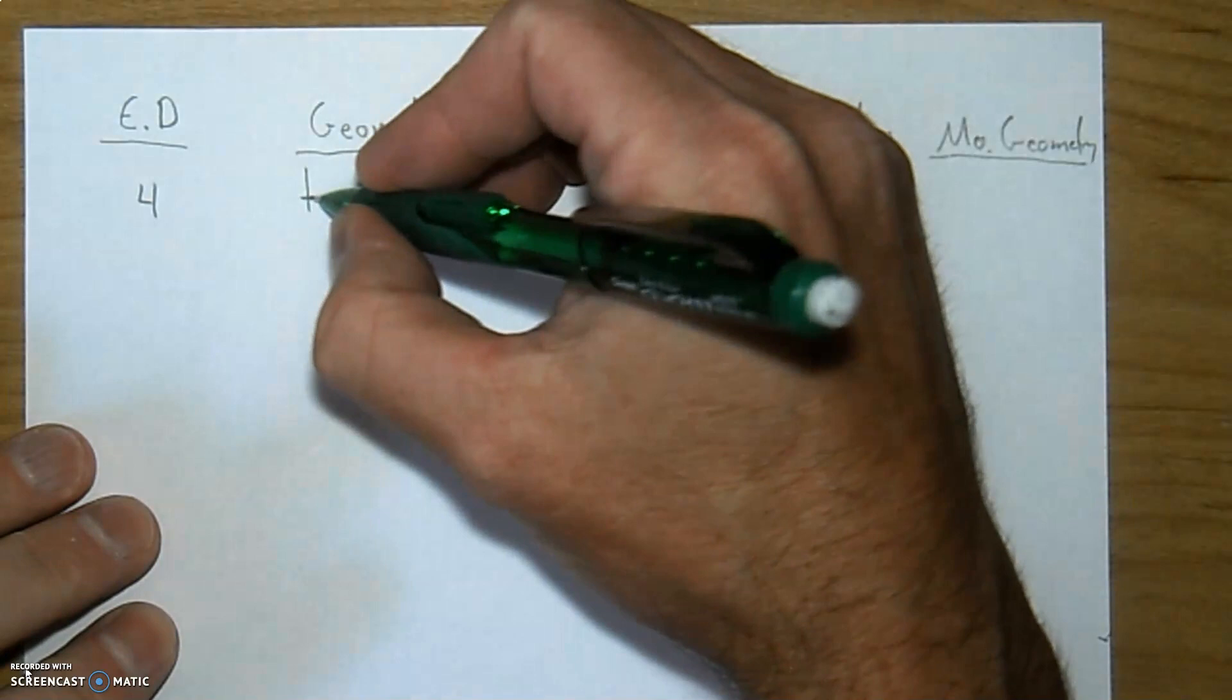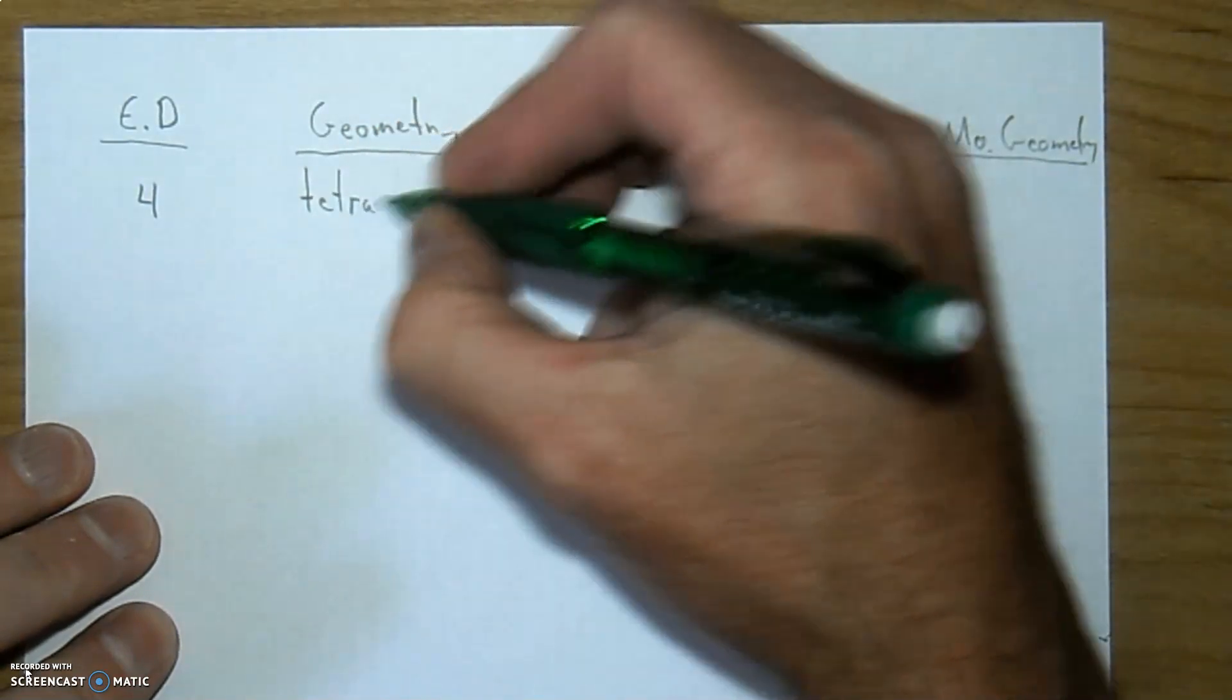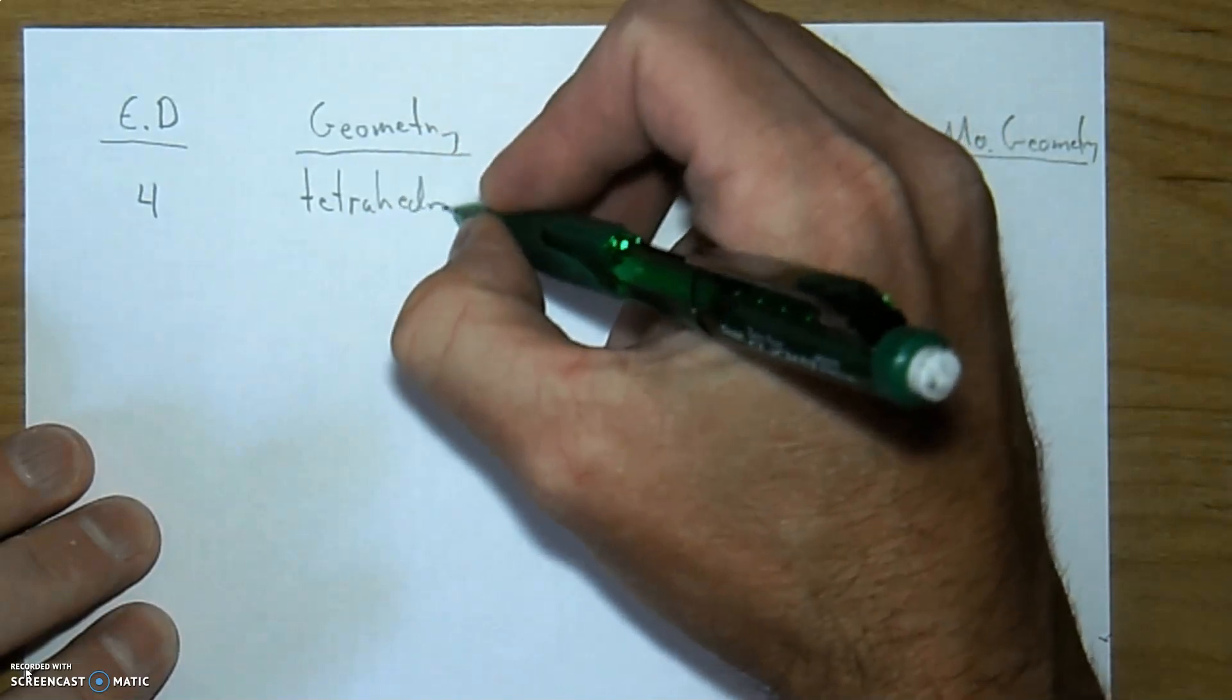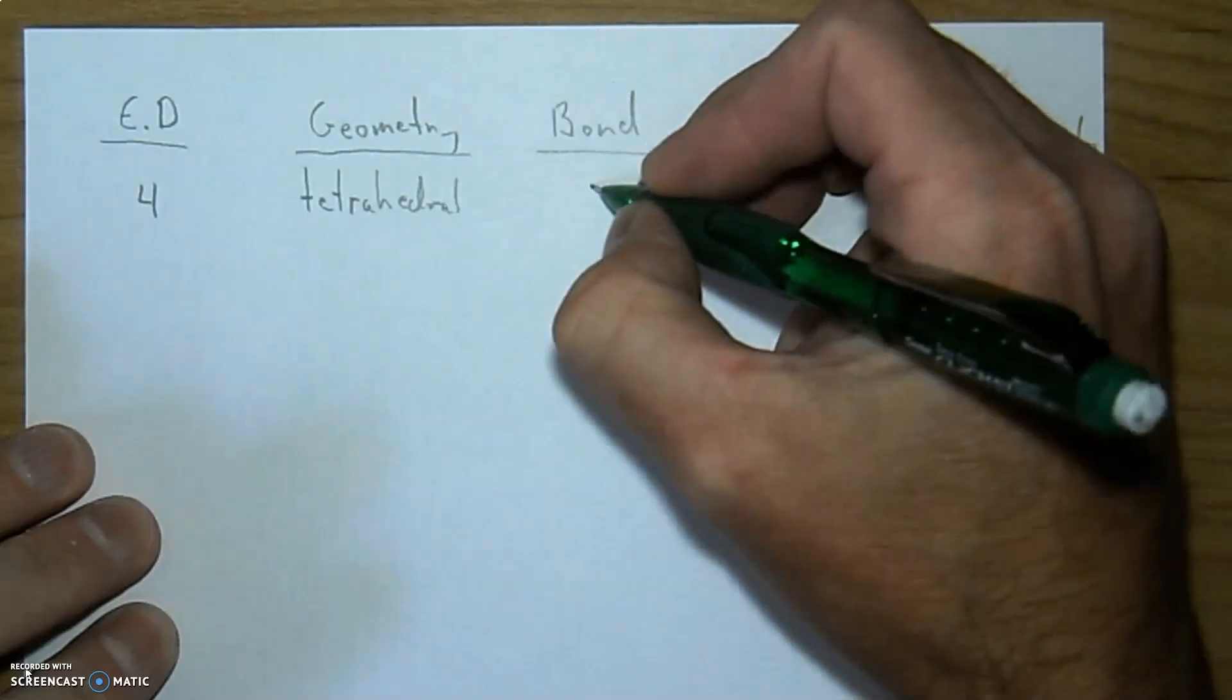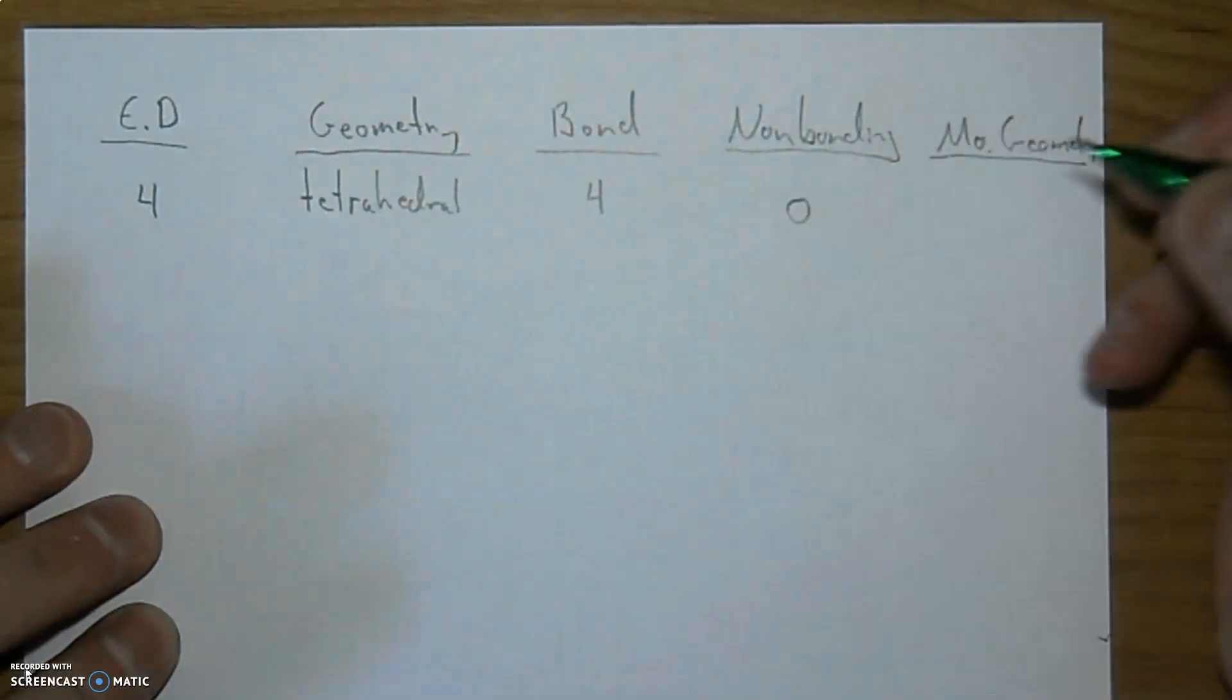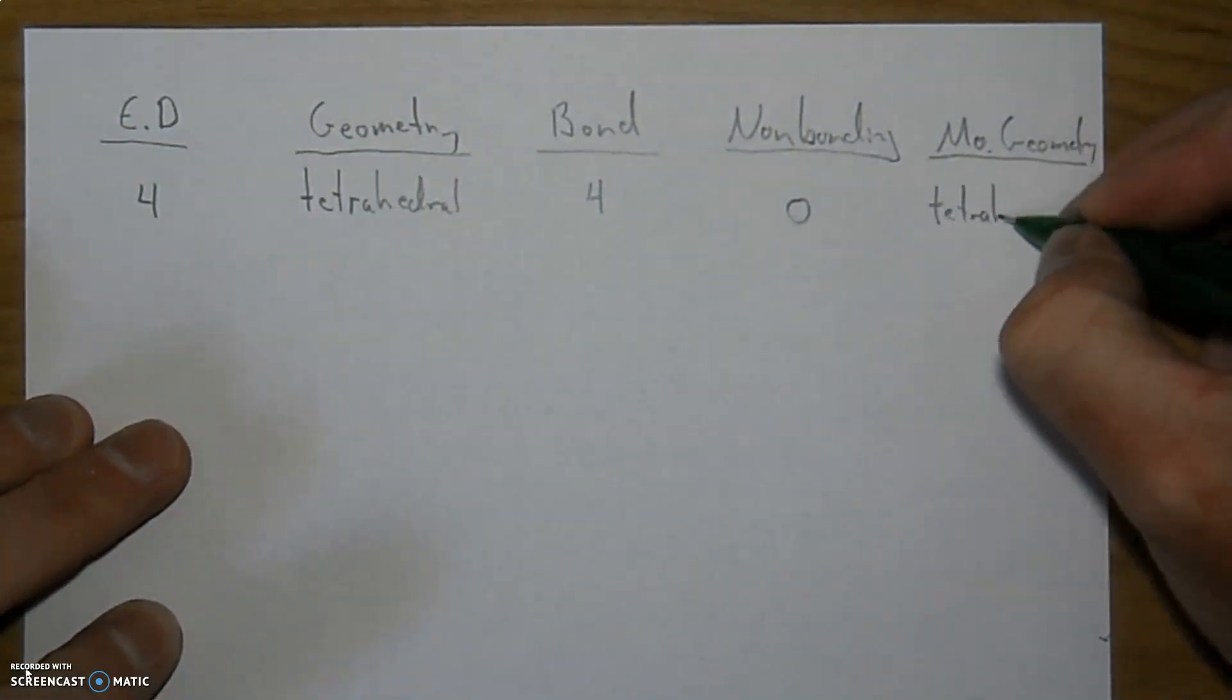So for the geometry here, if we have four electron domains, it is called tetrahedral. And again, if we have four bonding and zero lone pairs, that is just the same thing, tetrahedral.